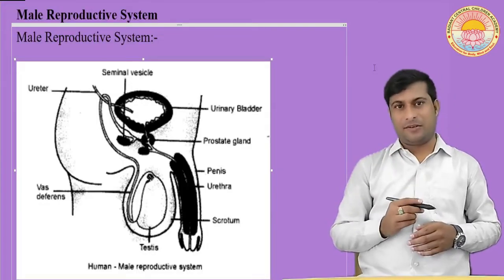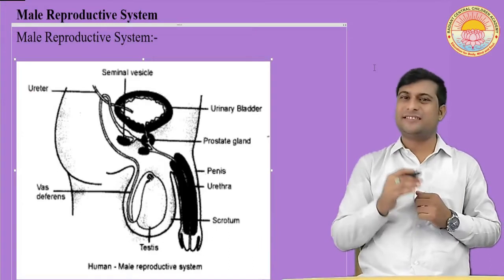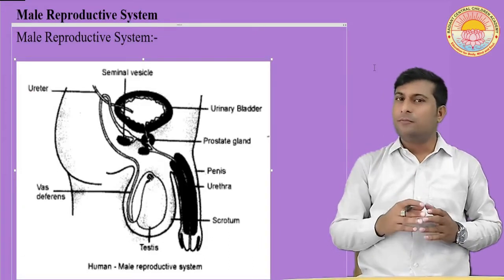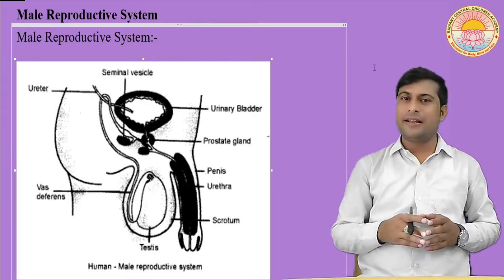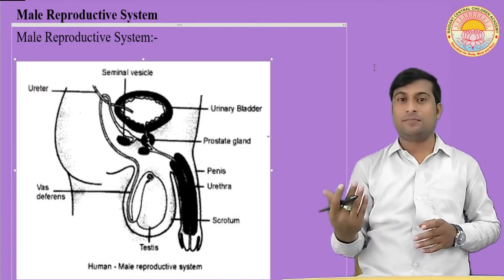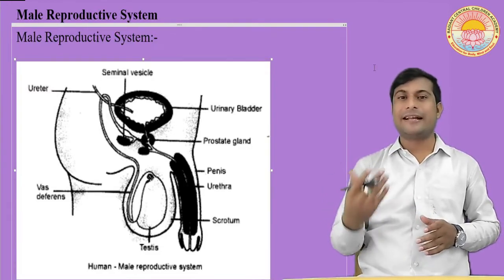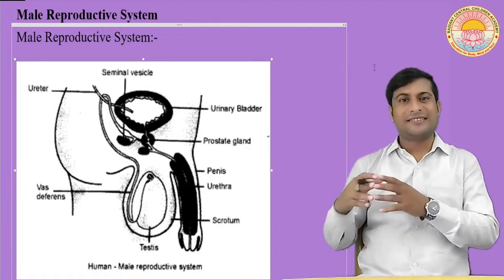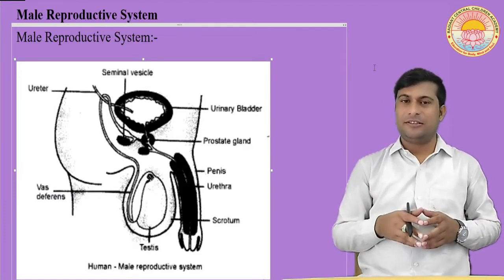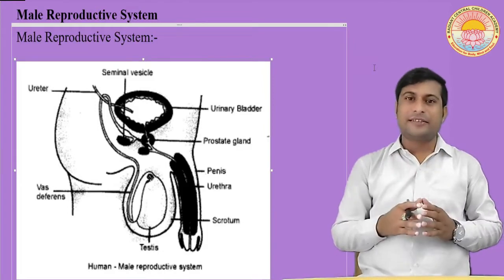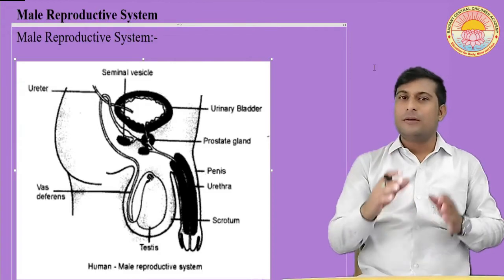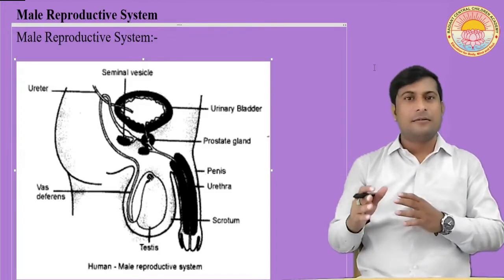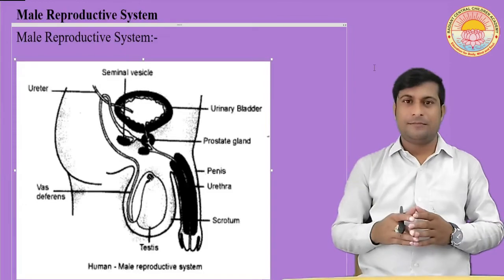Now we are going to discuss the male reproductive system. If we talk about the male reproductive system, we find that there are portions that produce the male germ cell or male gamete, that is sperm, and other portions that deliver these germ cells to the site of fertilization. The testes produce the male germ cells or male gametes, that is sperm.